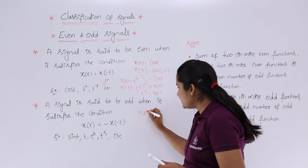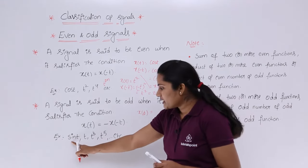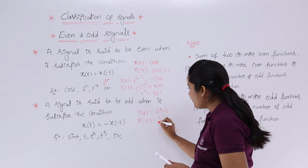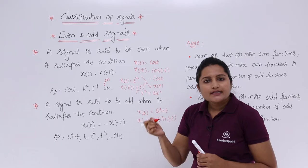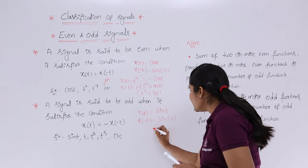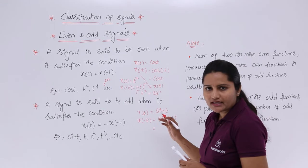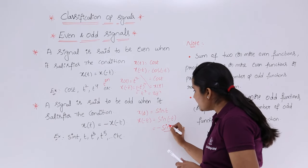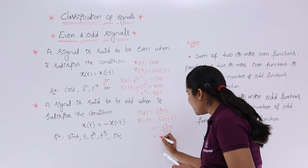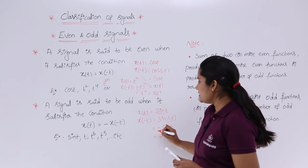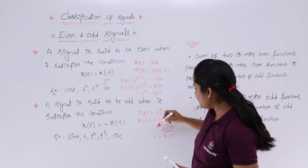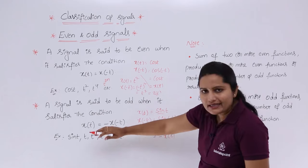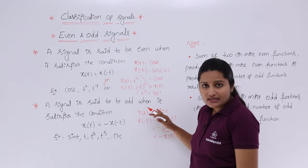Here I am going to check whether these signals are even or odd. Considering sin(t), if I calculate x(-t), what I get is sin(-t). You know that sin(-θ) = -sin(θ), so sin(-t) = -sin(t). Since sin(t) is your actual signal, this is equivalent to -x(t). So we satisfy the condition x(-t) = -x(t), meaning x(t) = -x(-t), and this signal is an odd signal.